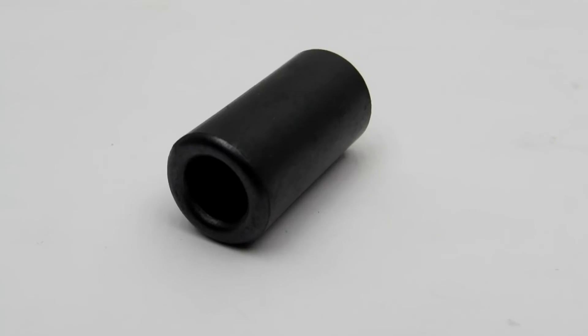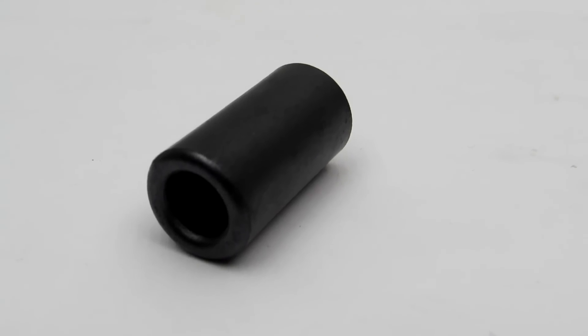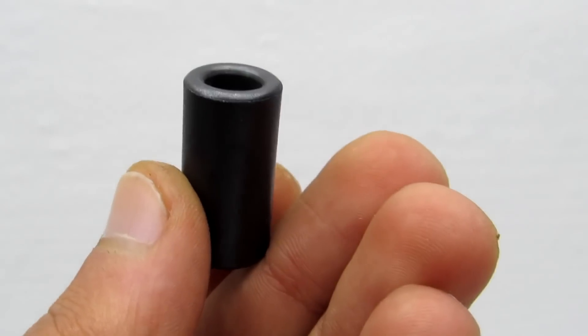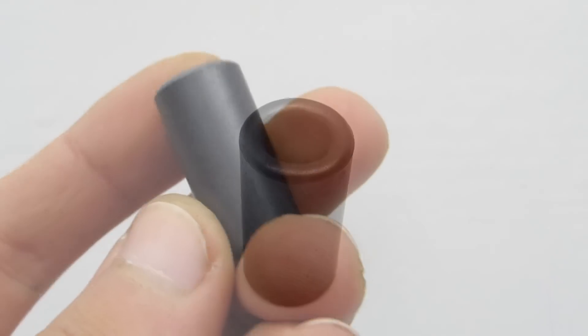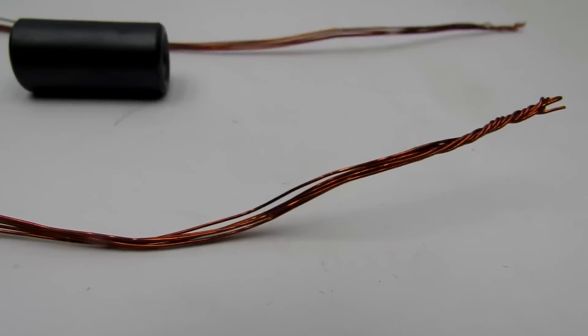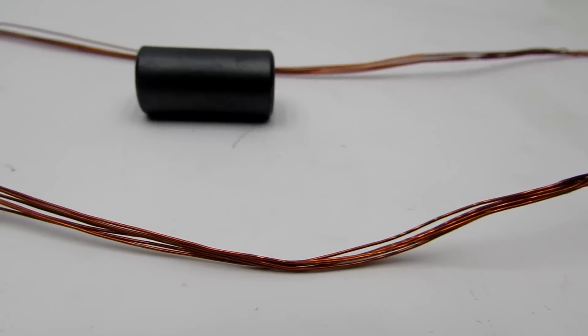But this time I took a barrel-shaped ferrite. Such ferrite can be found on the power cord of laptops and monitors. It is used to filter out interference. The primary winding consists of six turns and has tap from the middle.